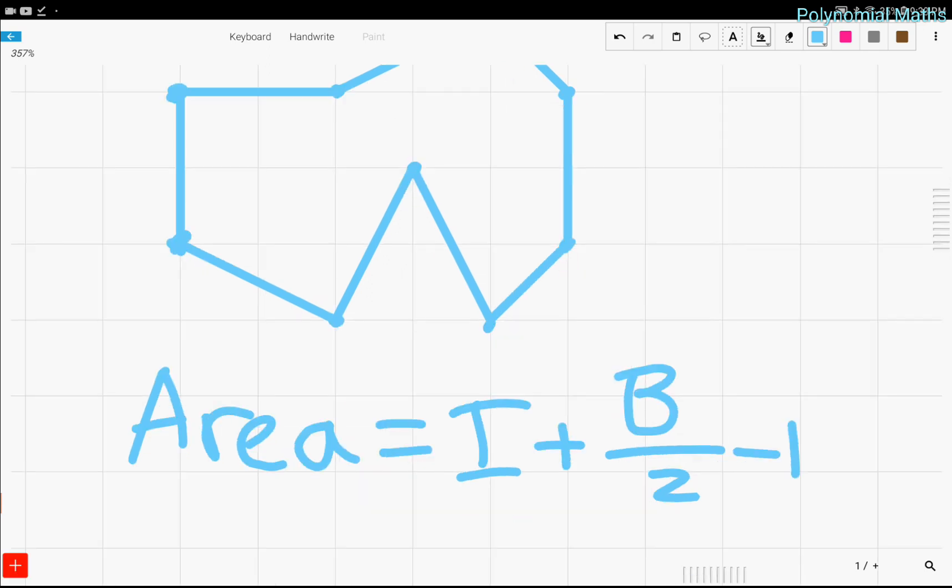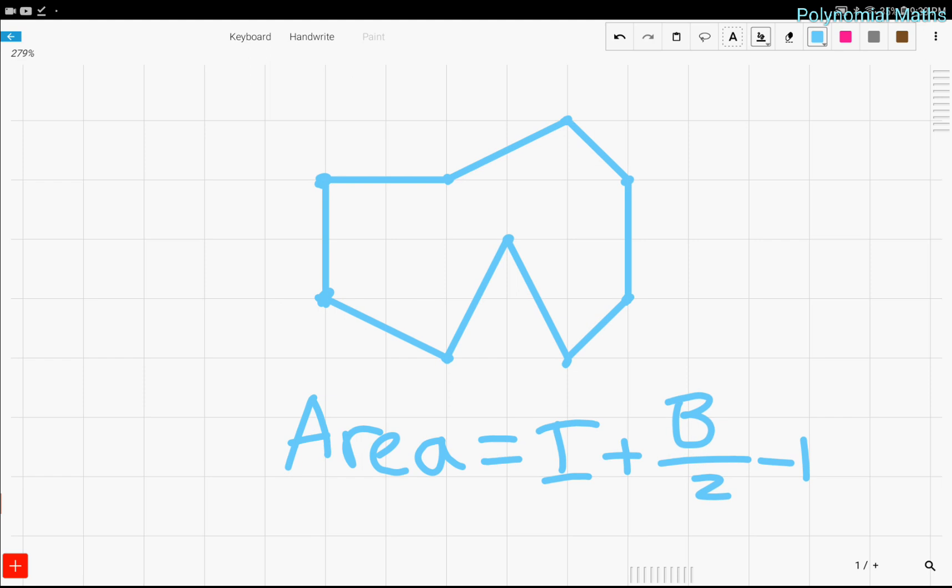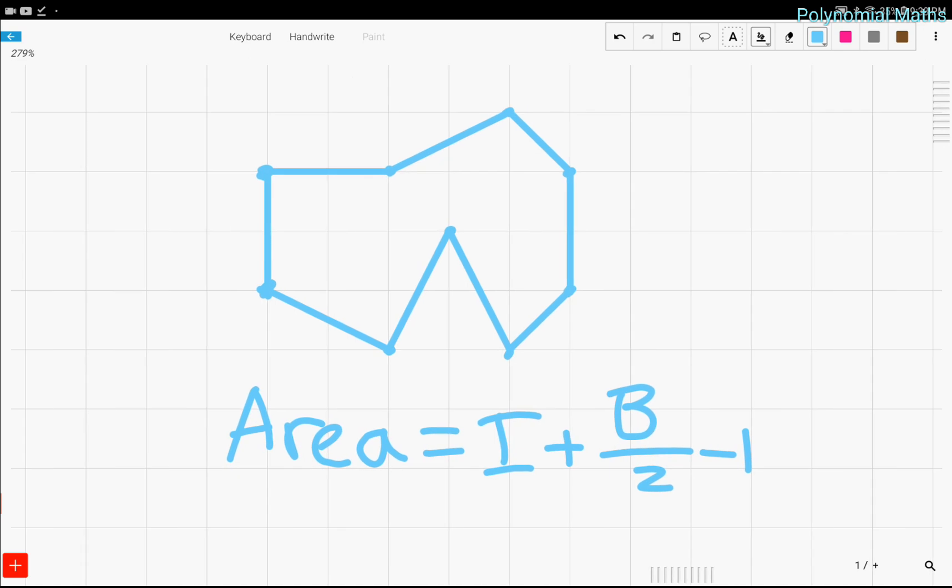This is equal to the area of the polygon. So, this simple formula can calculate the area of a polygon in such a simple way. So let me just repeat this.